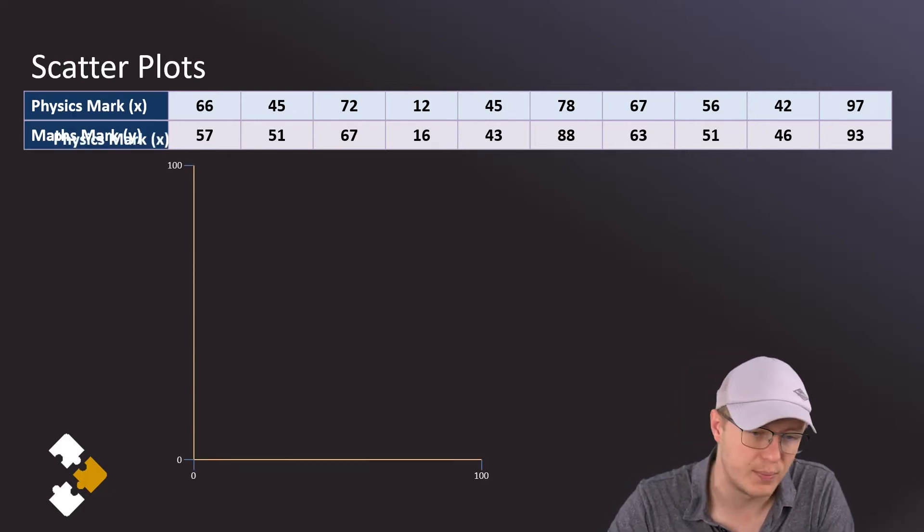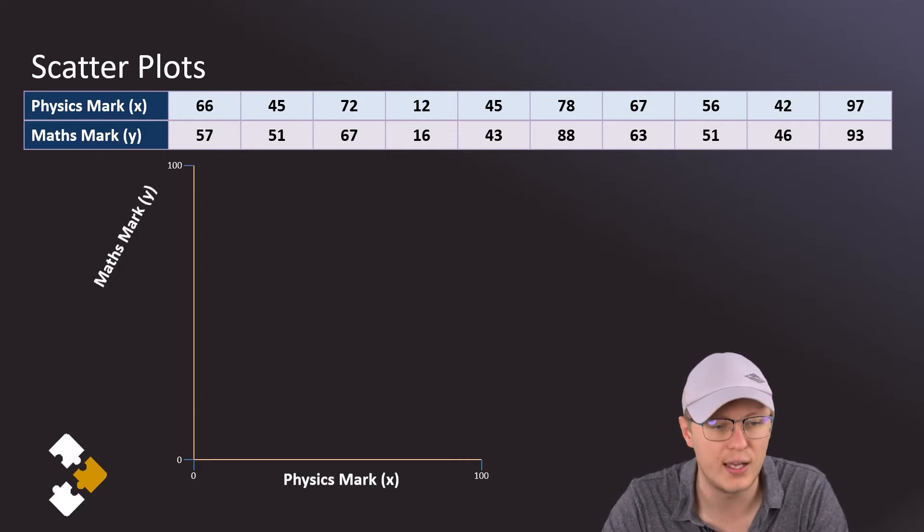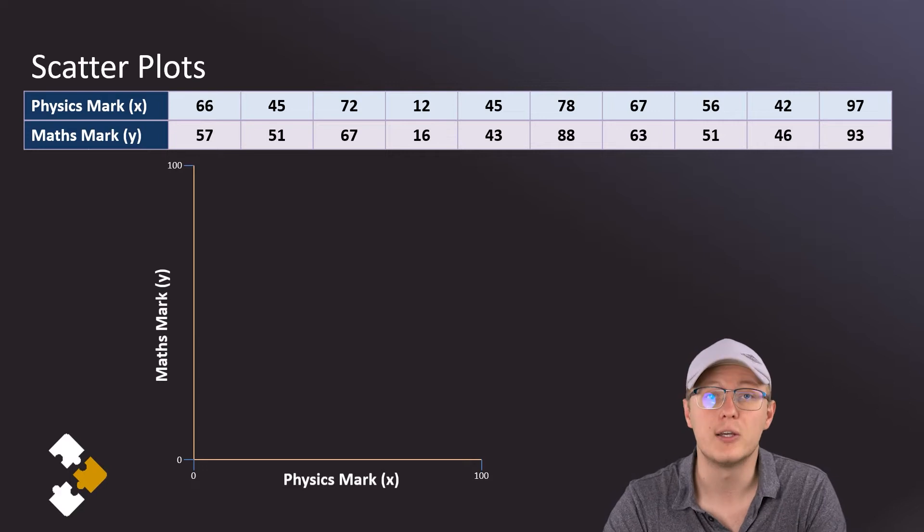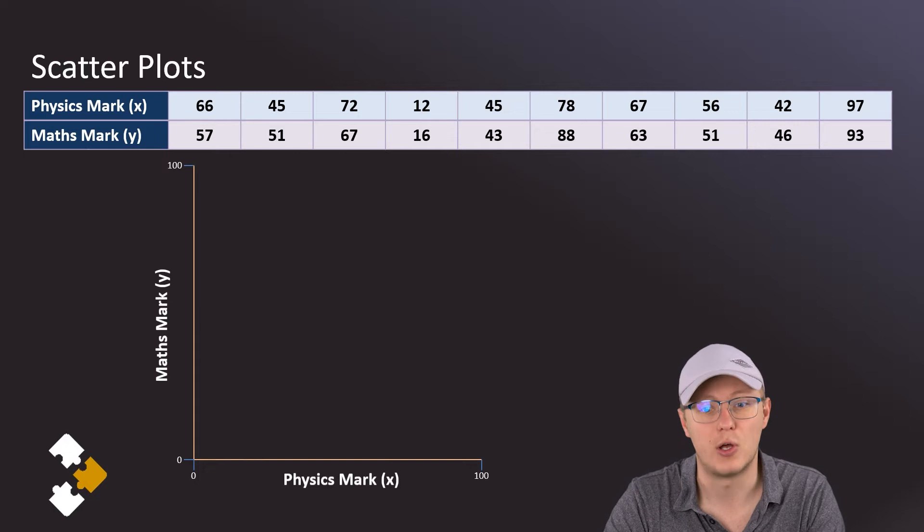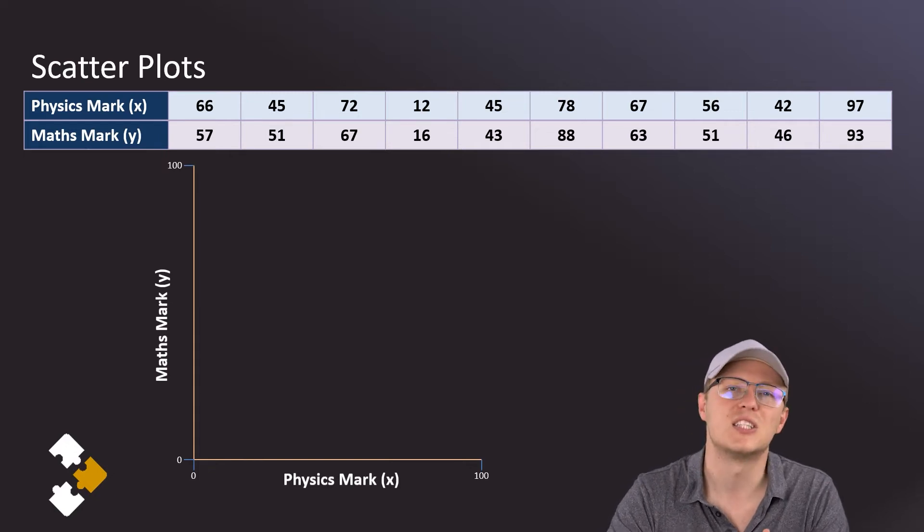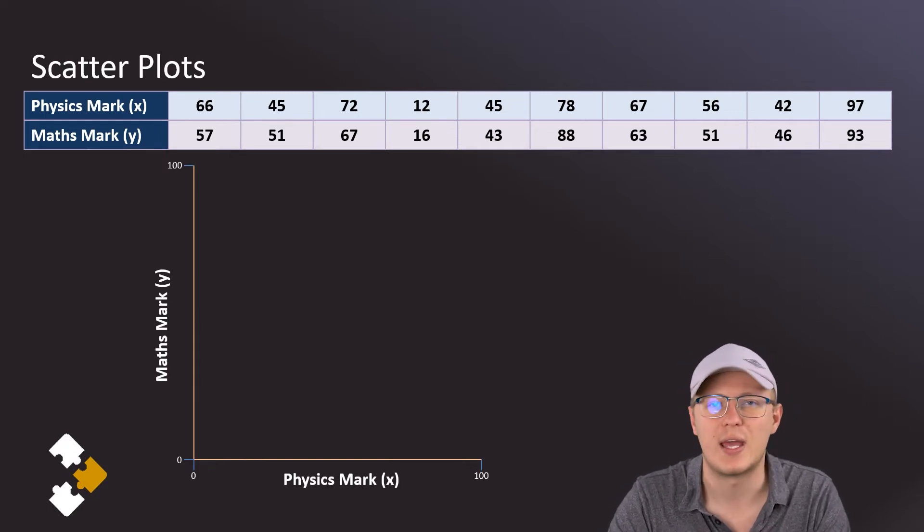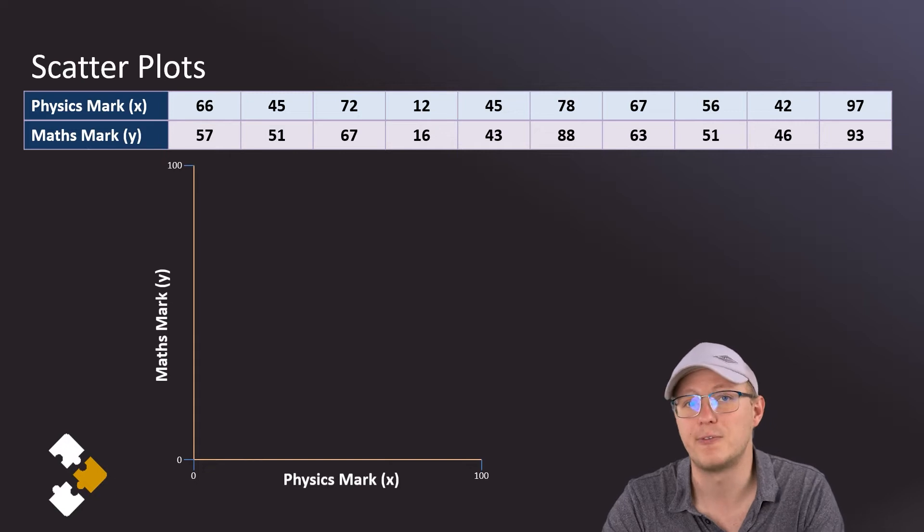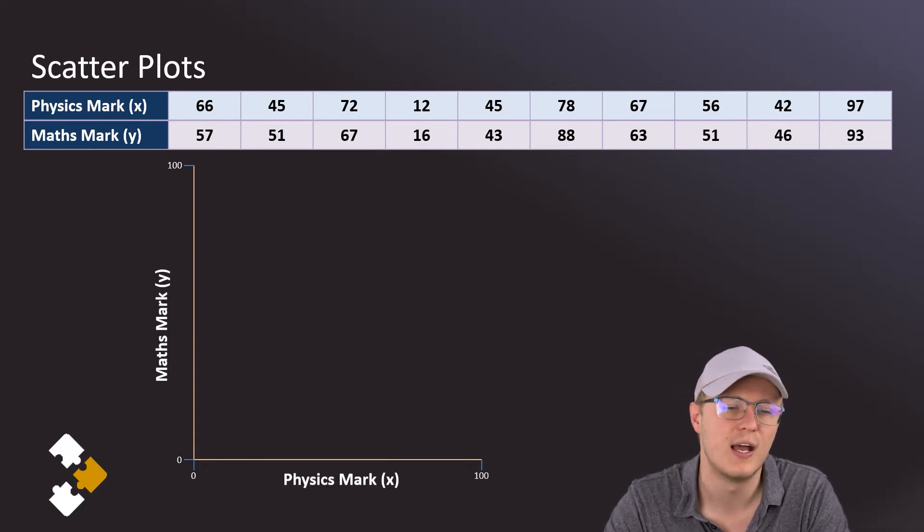The x variable is going to go on the x-axis and the y variable on the y-axis. Usually we would put the independent variable on the x-axis and the dependent variable on the y-axis, but it's not always true that we have an independent-dependent type of relationship. For example, here I don't think it's fair to say that the physics marks determine the maths marks. We can also just look at the relationship between two things where there isn't a relationship of dependence.